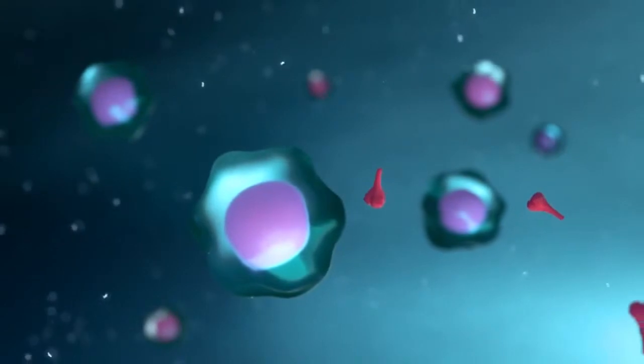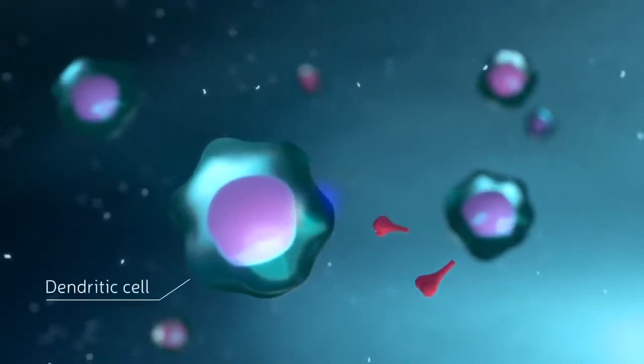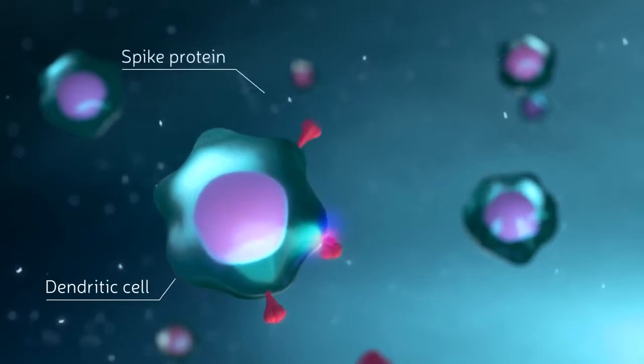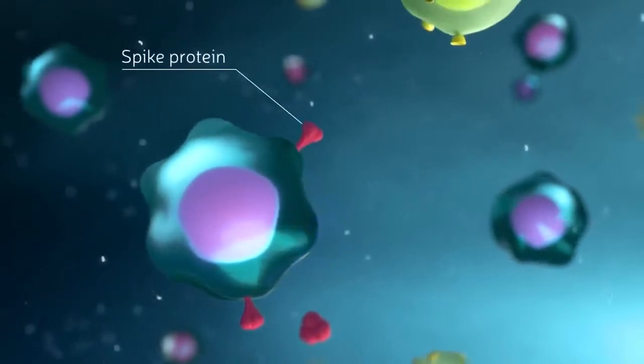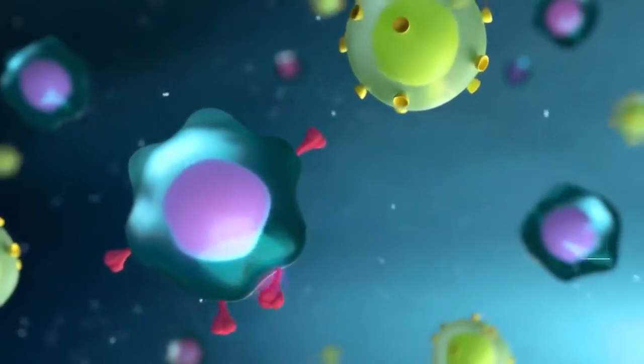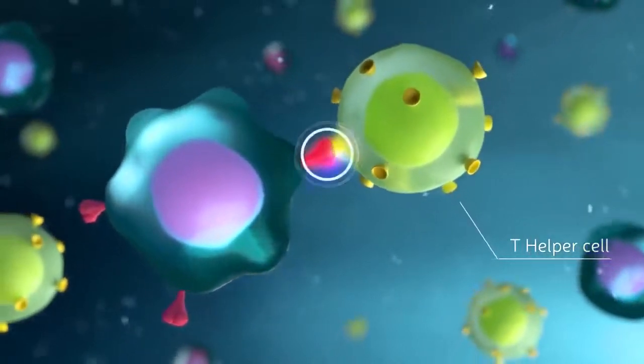The subsequent process is similar for all vaccine types. Immune cells patrolling the body present the spike protein as a foreign material to the helper T cells, the conductors of the immune system.